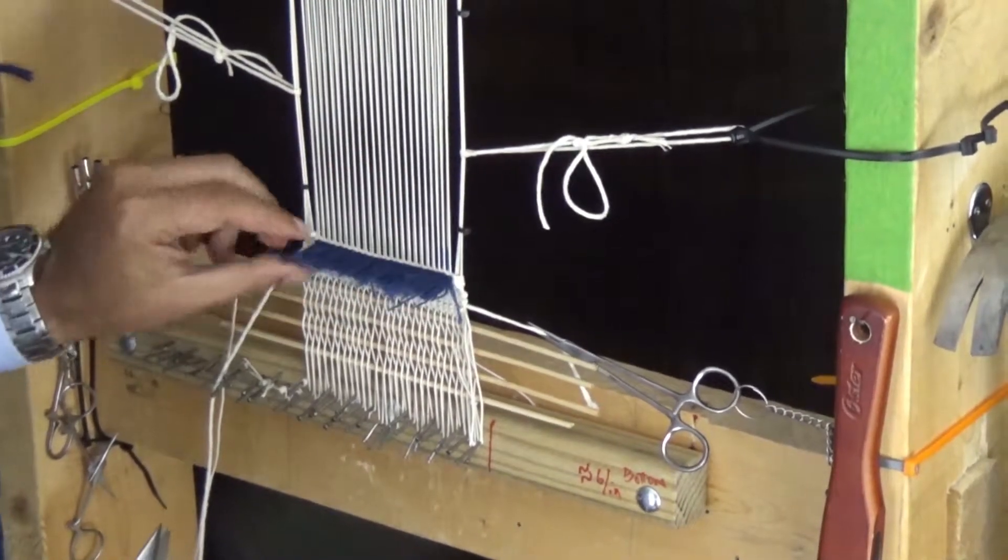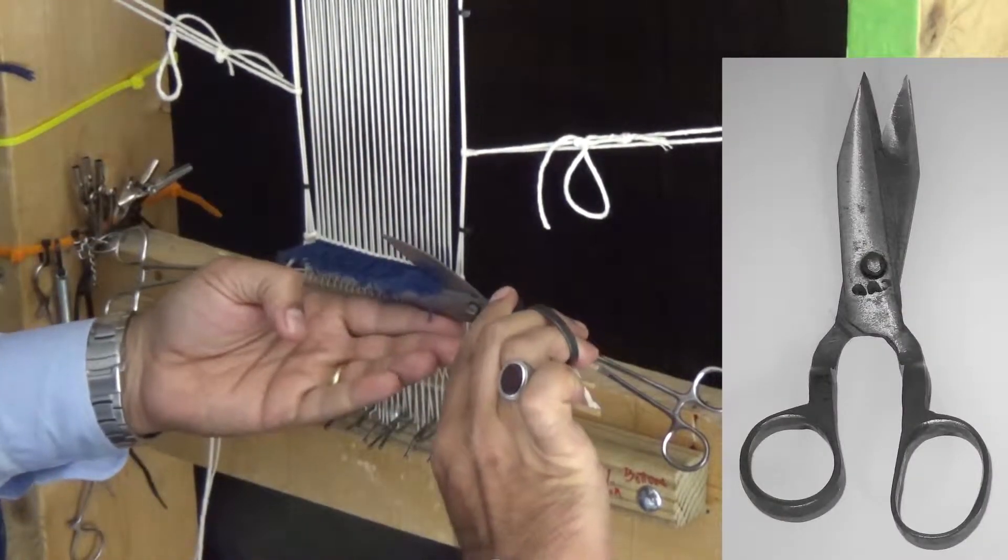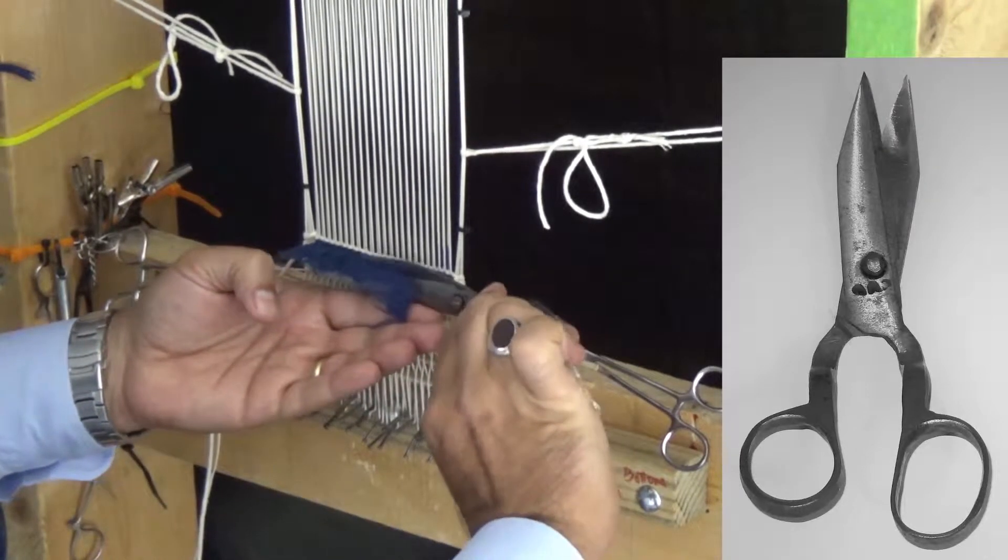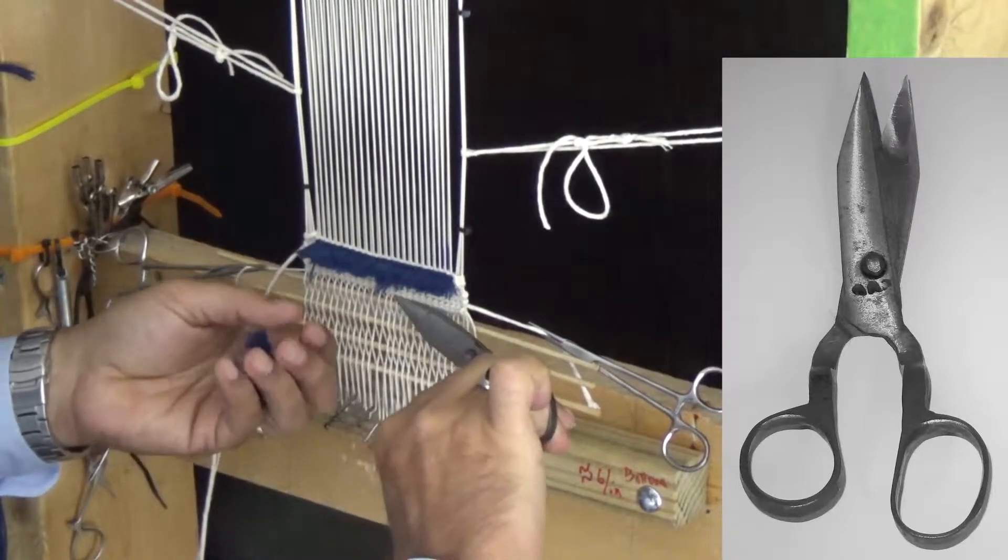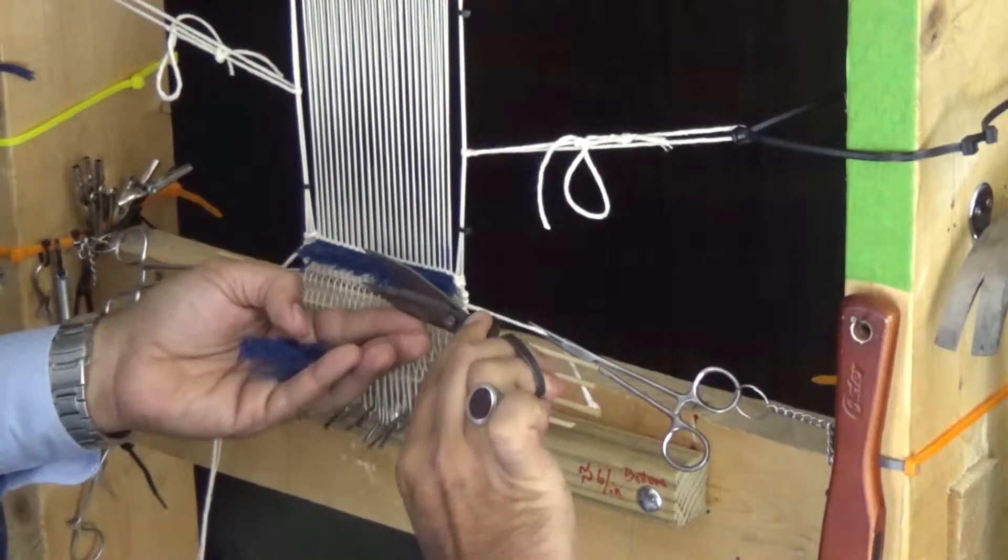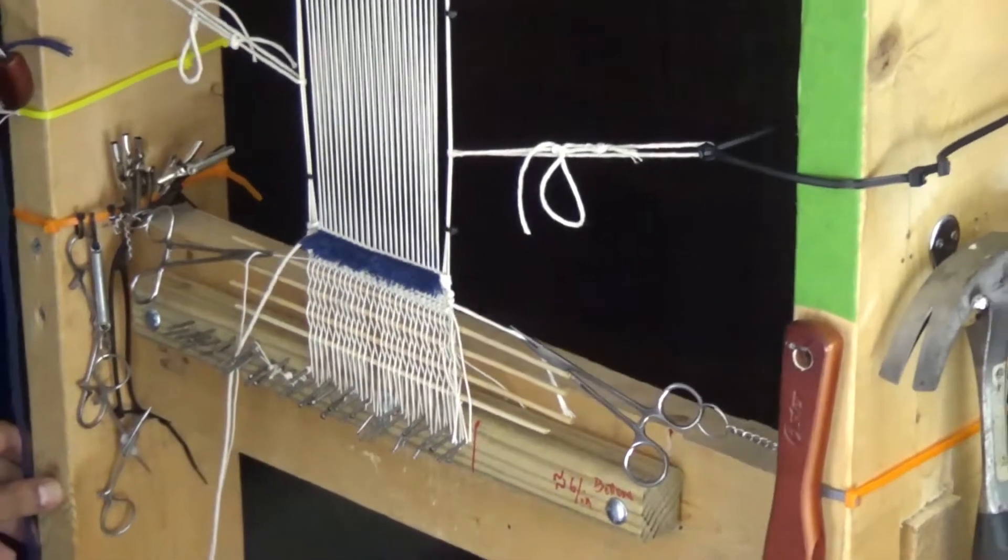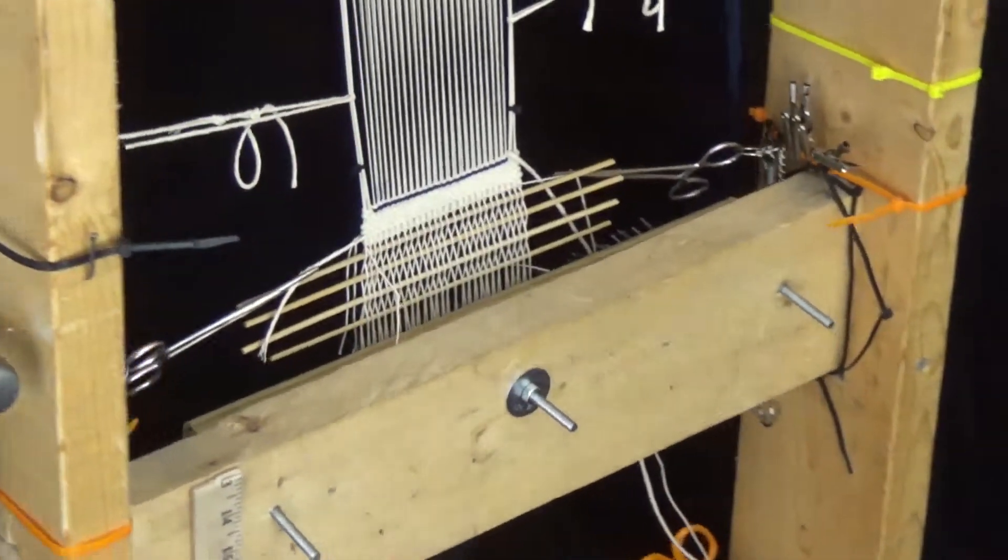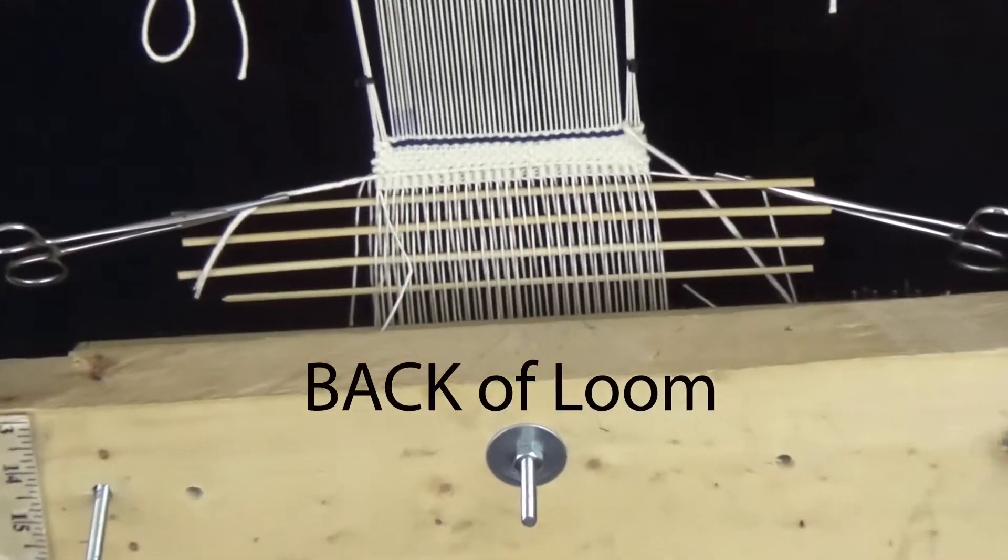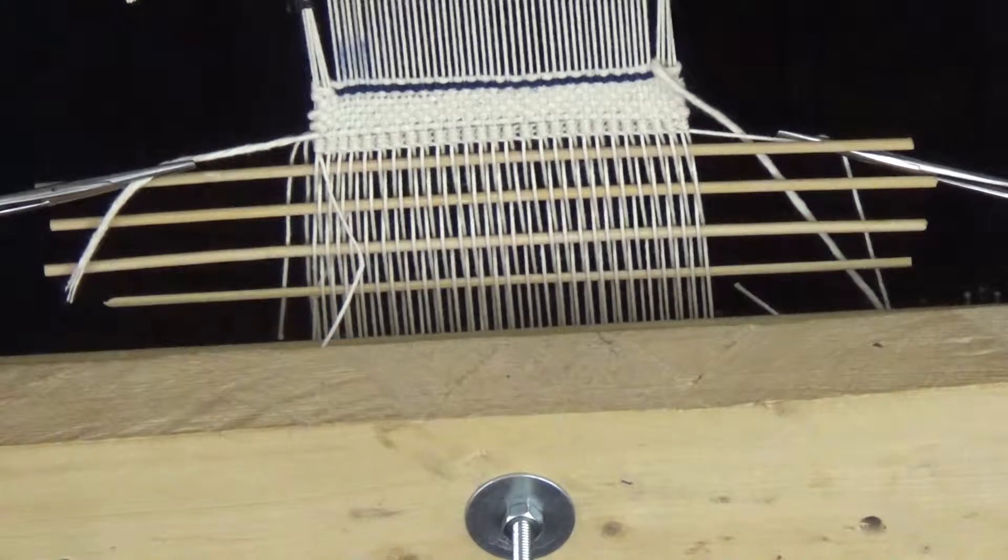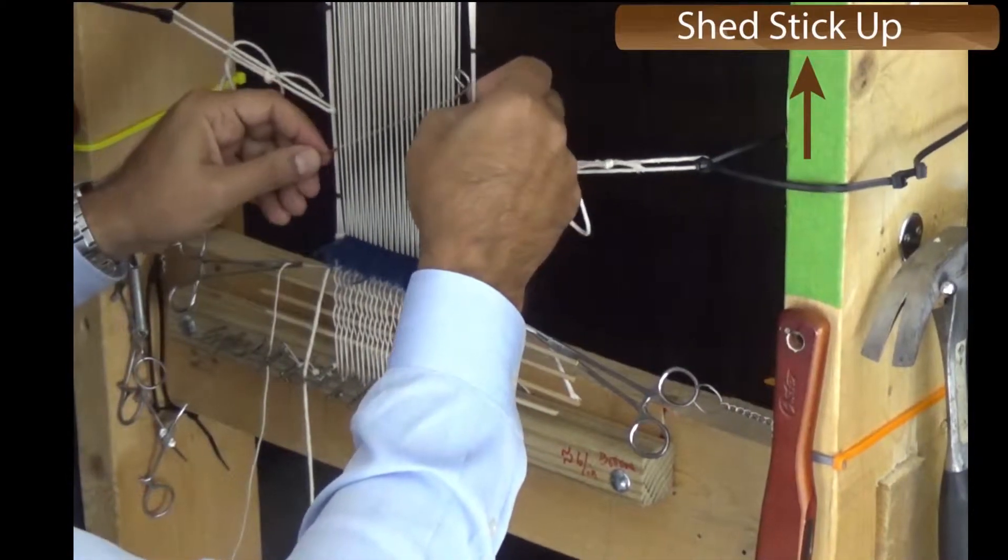Once the knots and the wefts are added, we will use a pair of traditional scissors to trim the excess wool from the knots. I have just completed the second row and I'm adding the weft.